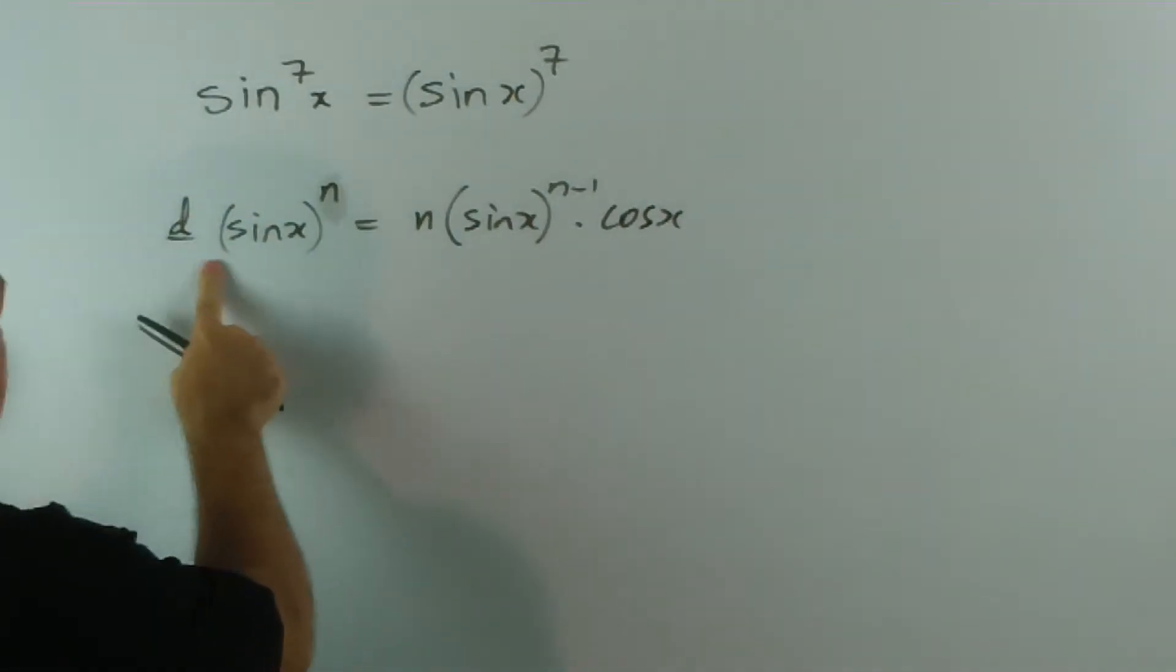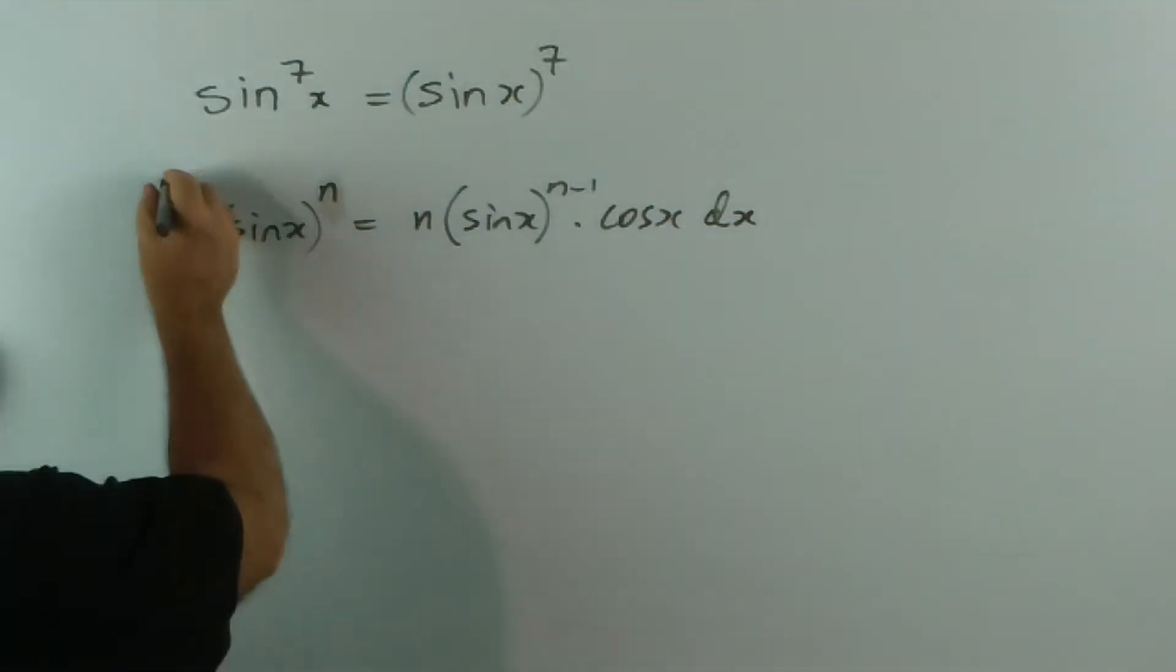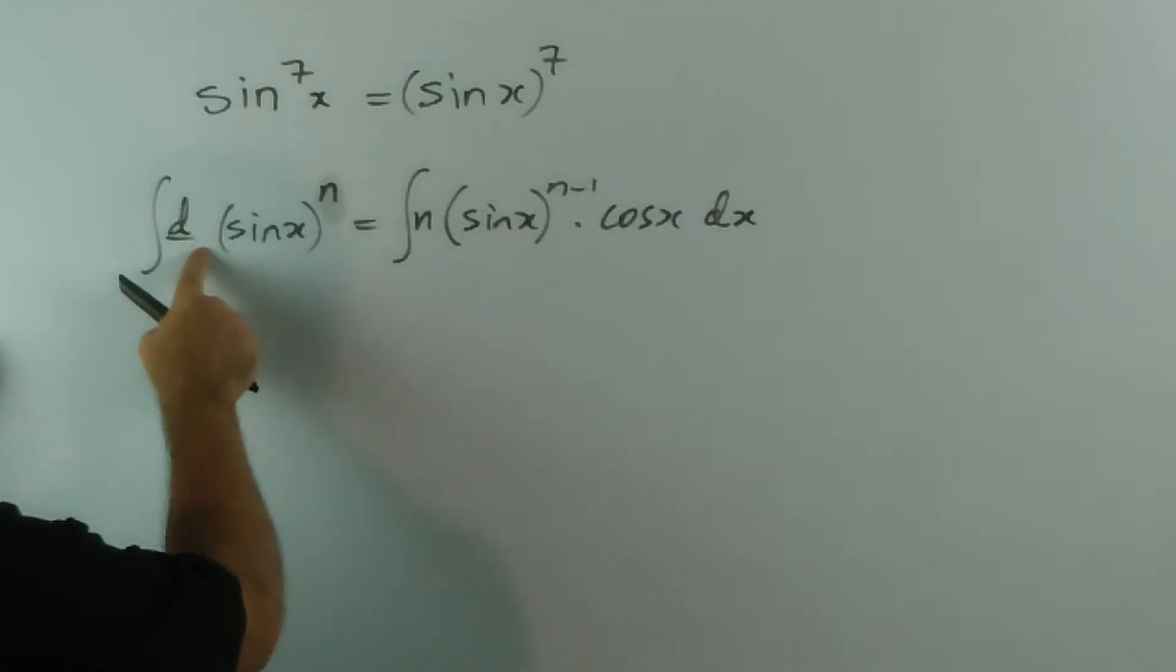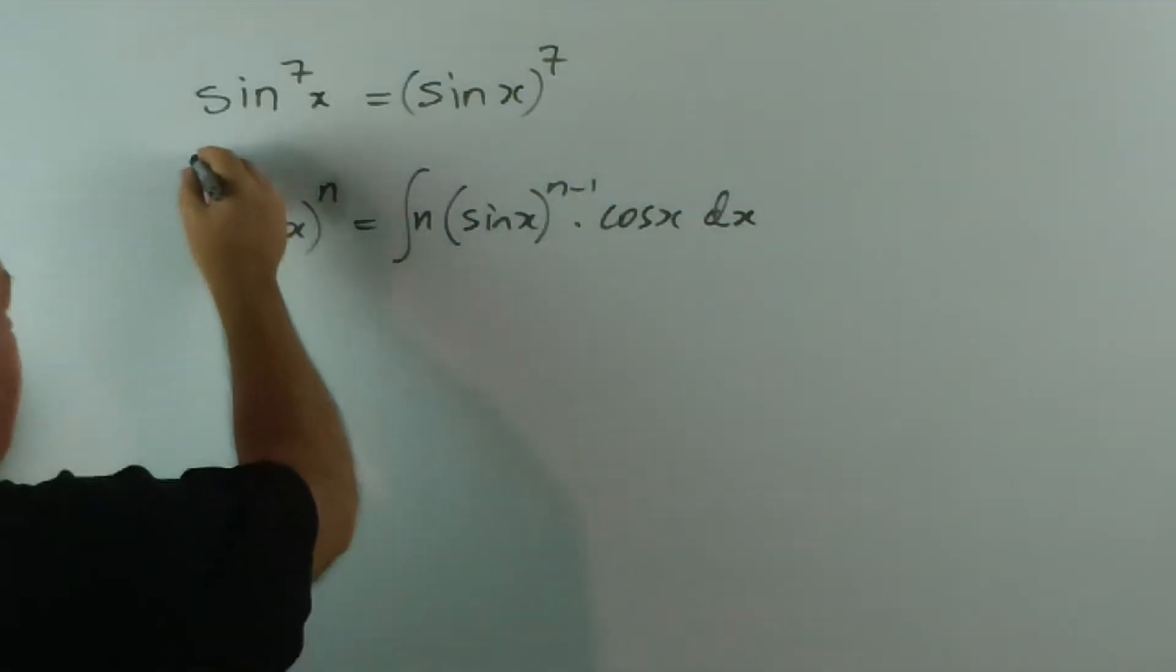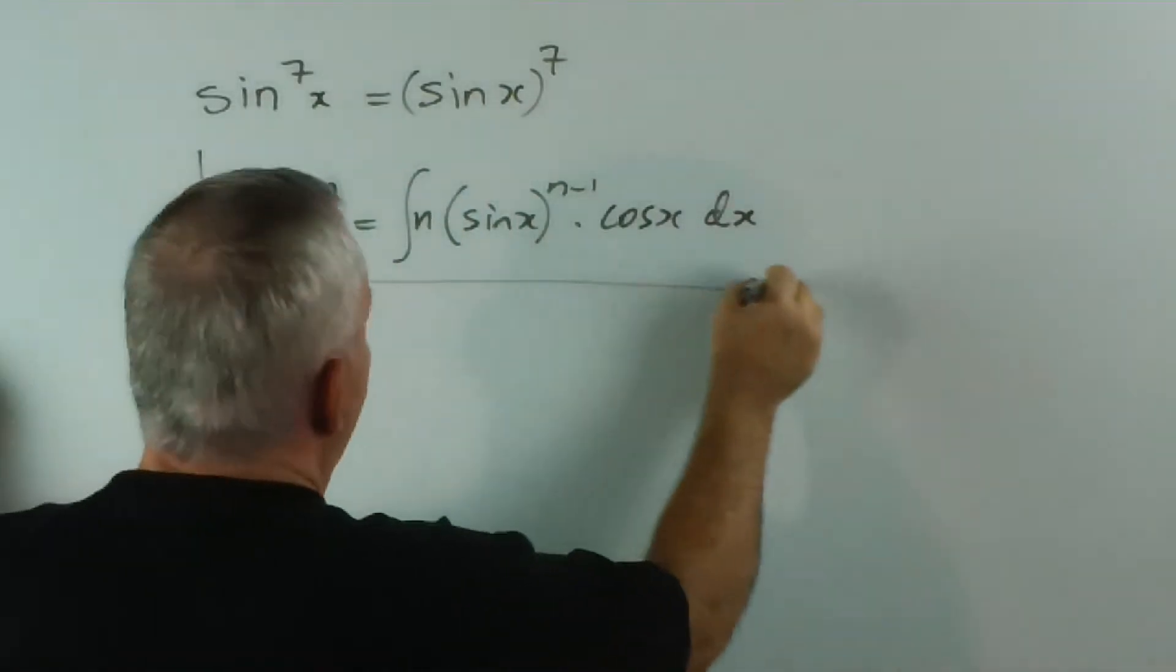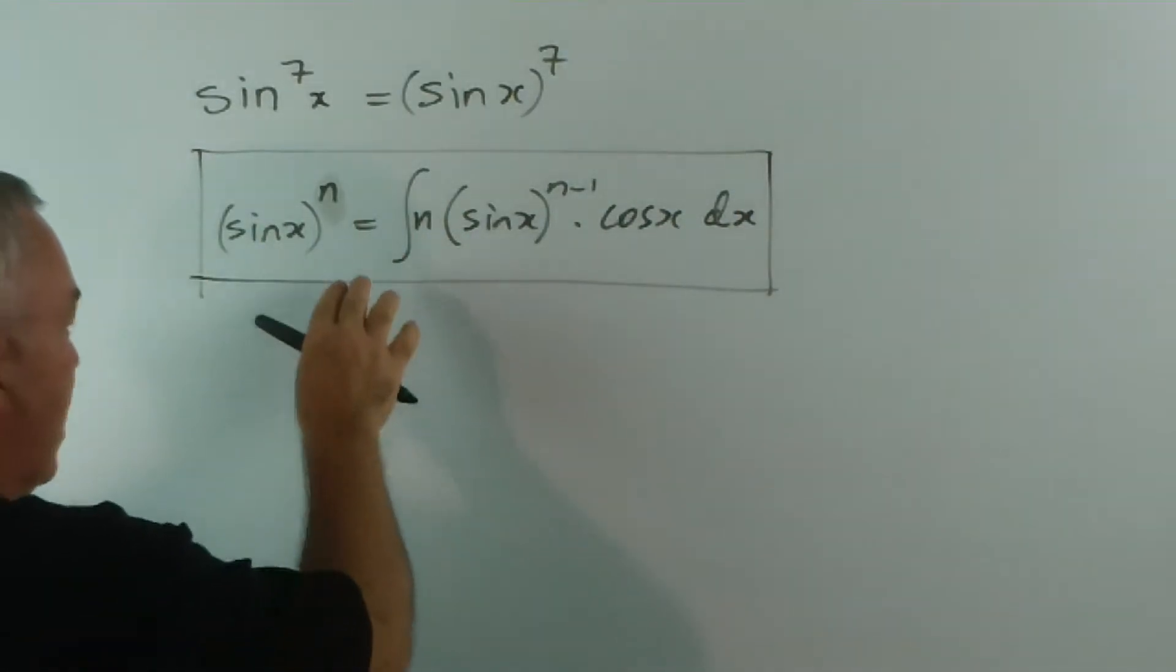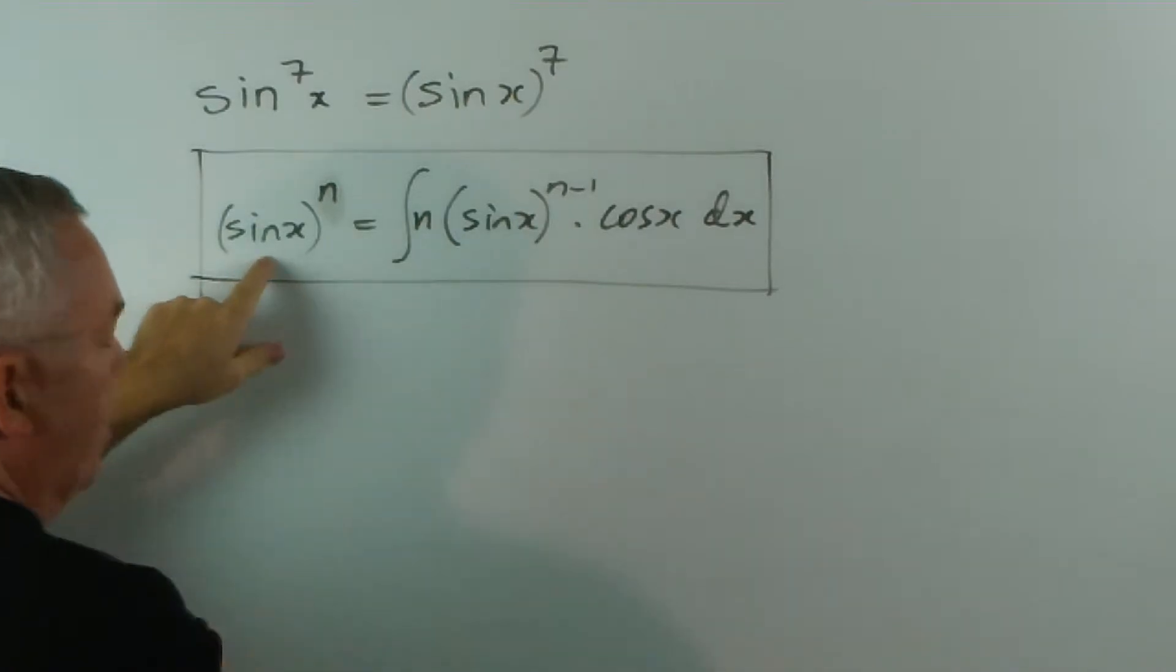Multiplying both sides by dx, we get this. Integrating, this integral undoes that derivative, so I'll remove them. And this is our first expression which shows that the pattern we're trying to achieve, in order to get this result,